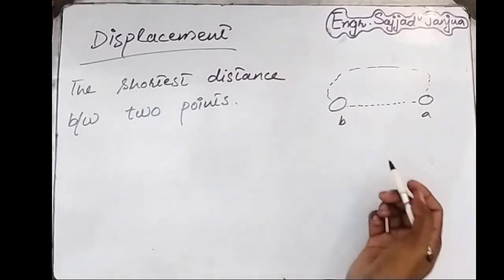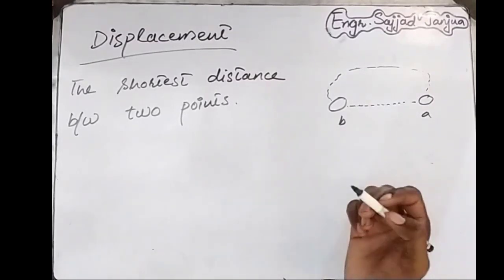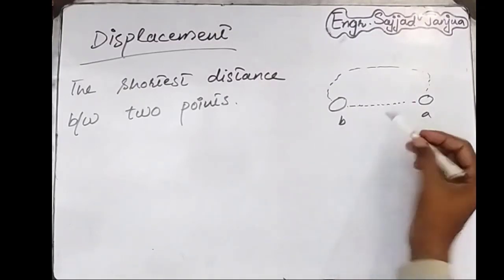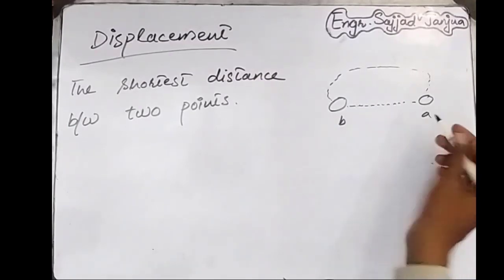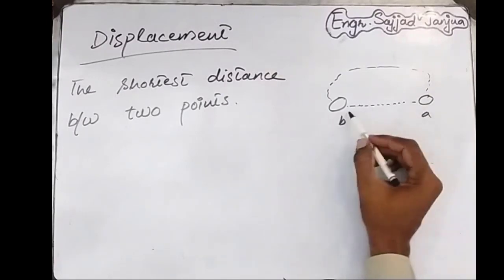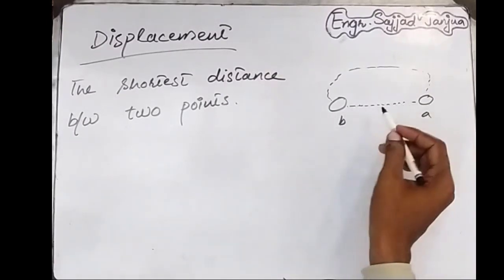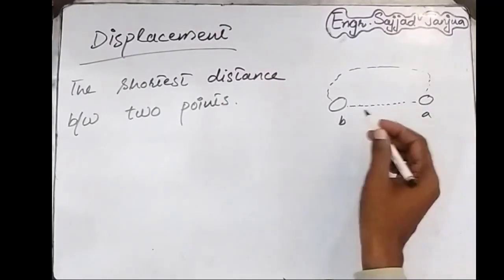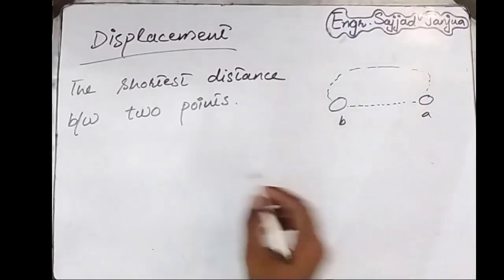To differentiate between distance and displacement: displacement is a vector quantity because we are concerned with both direction and magnitude, as we have to follow the shortest path. In case of distance we are only concerned with magnitude because we are not limited to a specific path. This is the main difference between displacement and distance.